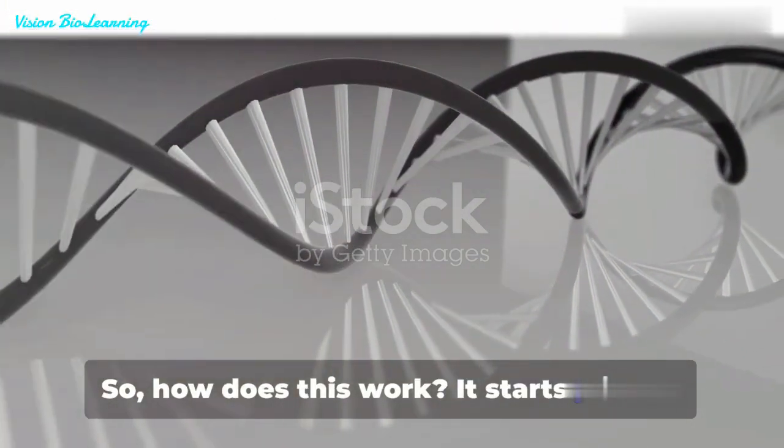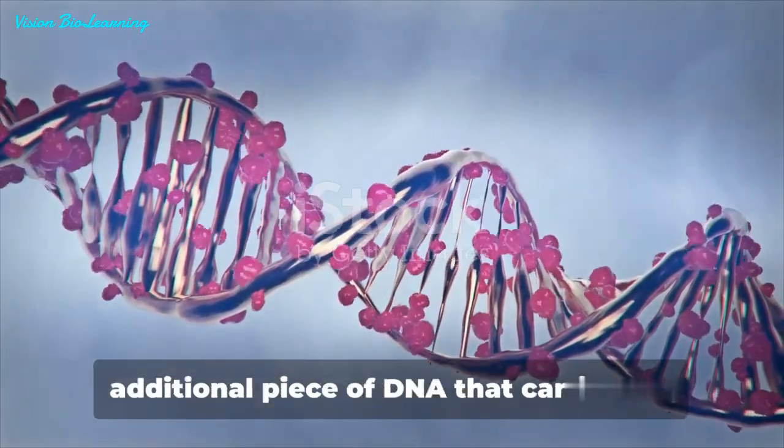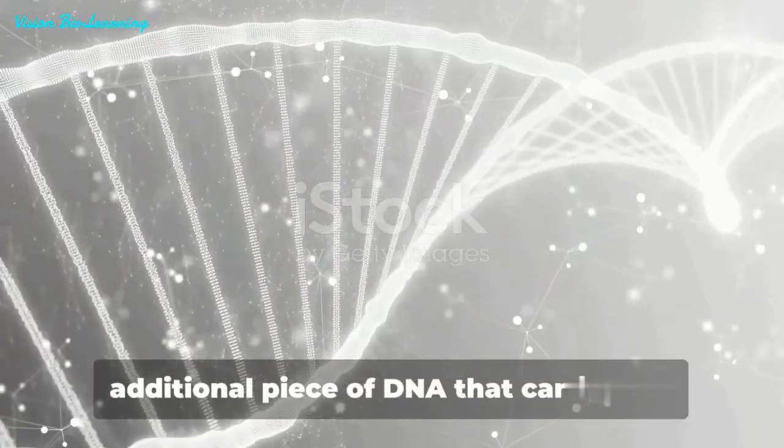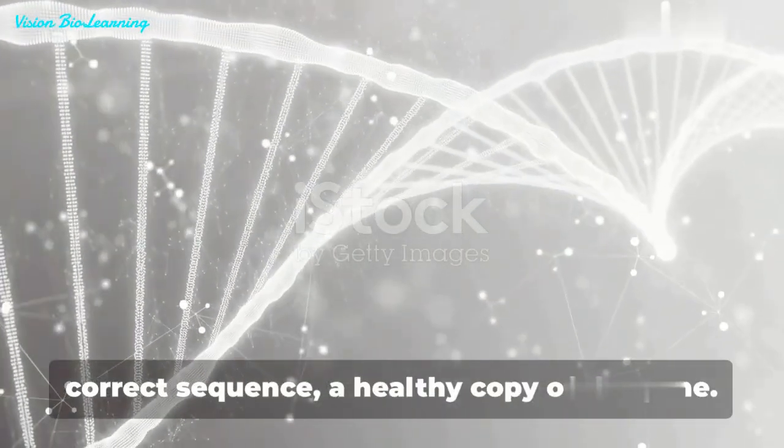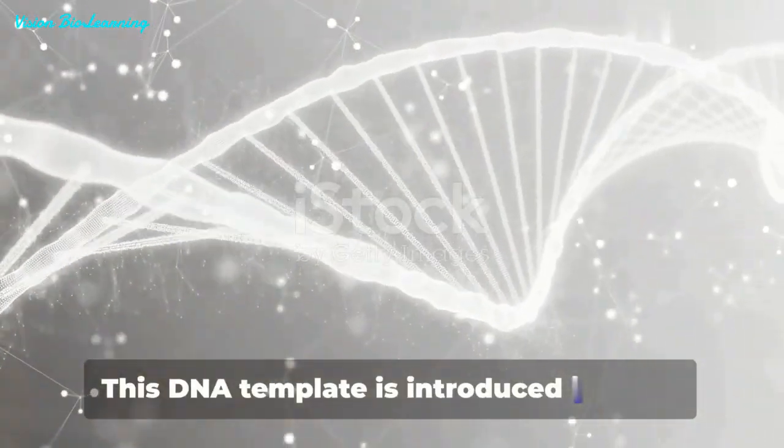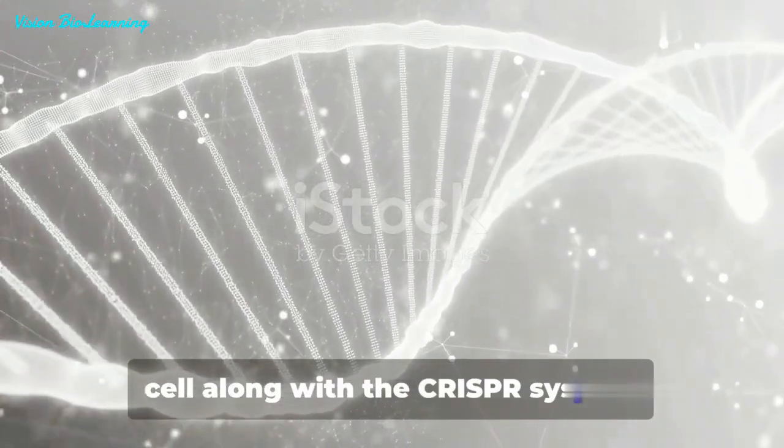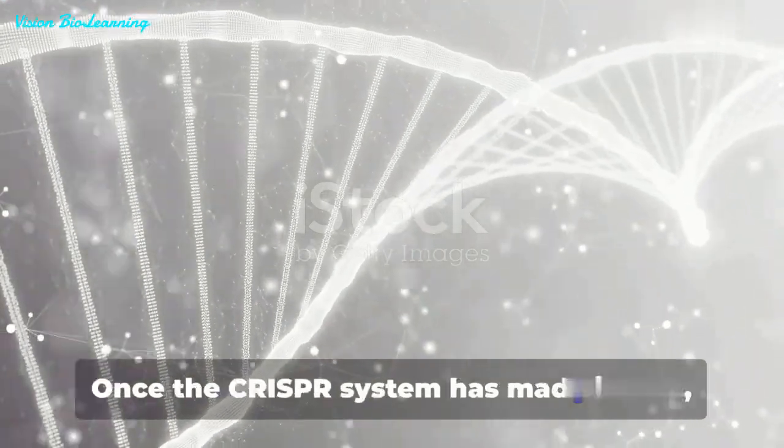So, how does this work? It starts with an additional piece of DNA that carries the correct sequence, a healthy copy of the gene. This DNA template is introduced into the cell, along with the CRISPR system.